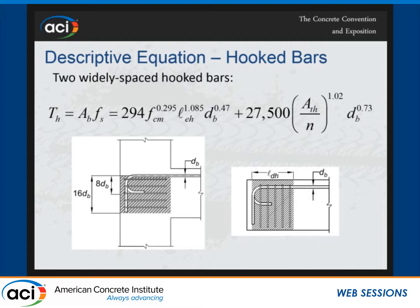This term represents the contribution of confining reinforcement. Our confining reinforcement can be parallel or perpendicular. ATH is the total area of the legs of the confining reinforcement within 16 bar diameters from the centerline going down if they're parallel to the development length, or in the region perpendicular along the development length. Notice this region operates even though these bars yield at the top — they operate on an average of about 28 KSI. ATH is the total area; N is the number of hook bars. So this is the area of confining reinforcement per hook bar to the first power. Bigger bars do a better job of grabbing hold of confining reinforcement than smaller bars.